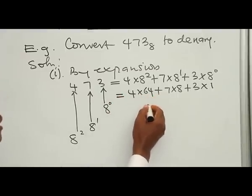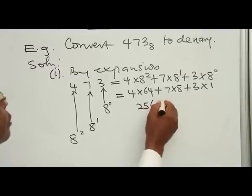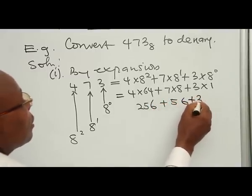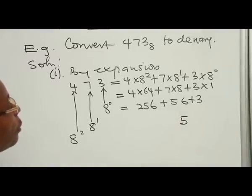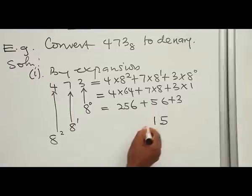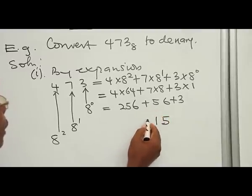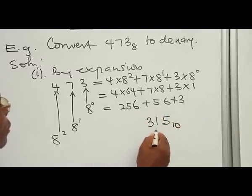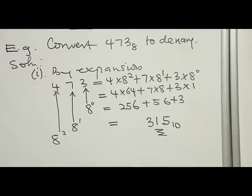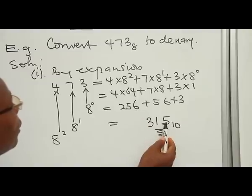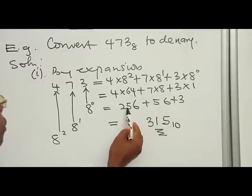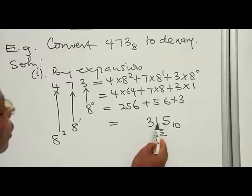Simplifying: 4 times 64 is 256, plus 7 times 8 is 56, plus 3 times 1 is 3. Adding them: 3 plus 6 plus 6 is 15, carry 1; 6 plus 5 plus 1 is 12, carry 1; and this gives you 315 in base 10. So 473 base 8 is equal to 315 base 10.